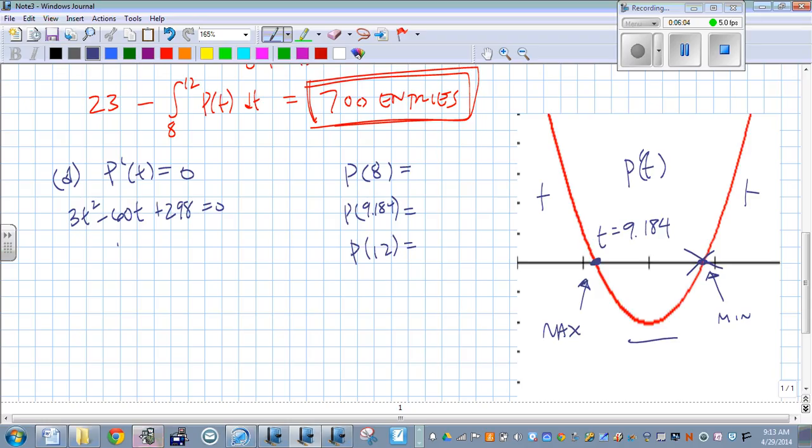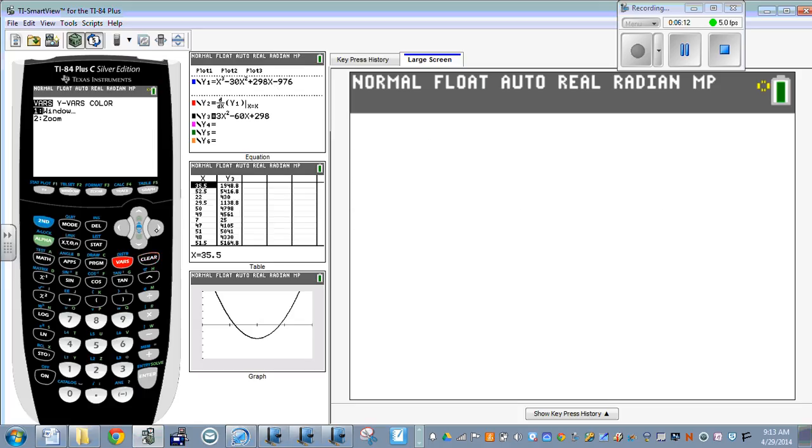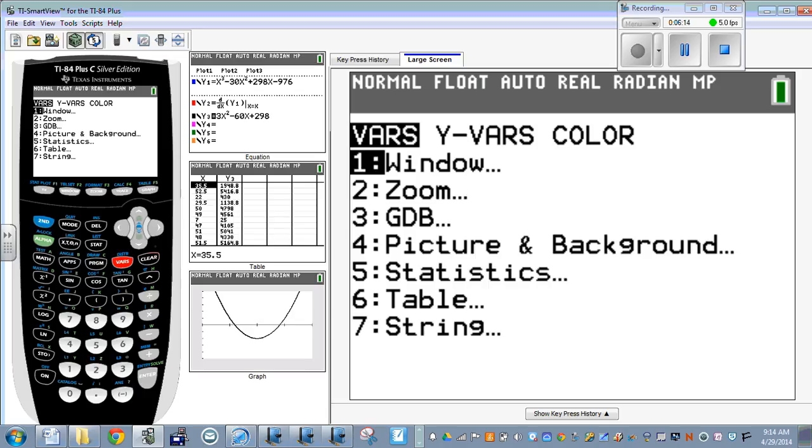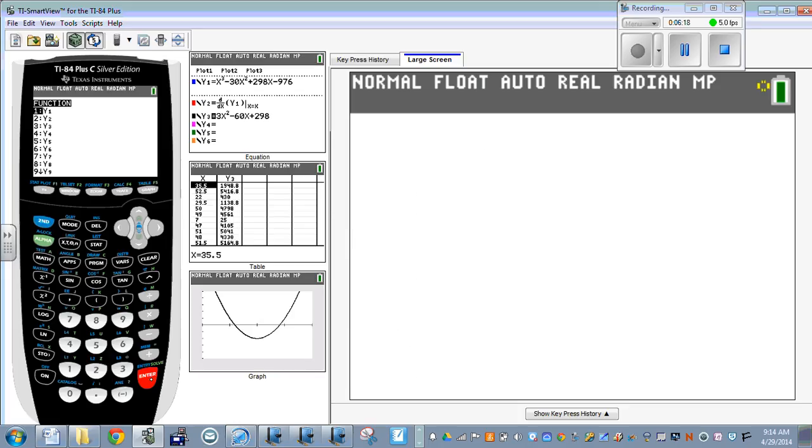Well, here's another benefit of putting that in for y sub 1. Remember, p of t is in there for y sub 1. So if I do vars, y vars, function, y sub 1. I can do parentheses 8, and then the calculator is going to put 8 into that function for me.